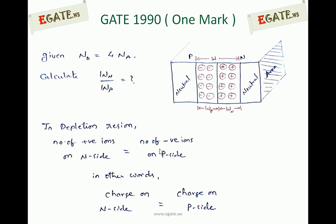So, the charge on the N side is equal to the charge on the P side. Within the depletion region, the charge is always going to be the same on both sides, because outside the depletion region the material is neutral. In the depletion region, the charge on the N side equals the charge on the P side — that is, the number of positive ions on the N side equals the number of negative ions on the P side.